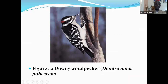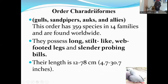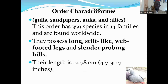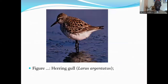The next order is Order Charadriiformes, which consists of the gulls, sandpipers, auks, and allied species. This order has 359 species in 14 families and are found worldwide. They possess long, stilt-like, web-footed legs and slender probing bills. Their length is 12 to 75 centimeters, though some can be up to 150 centimeters. Here is the herring gull — a wading bird.